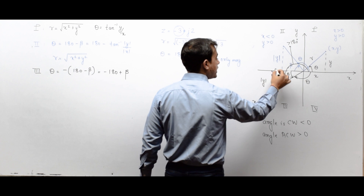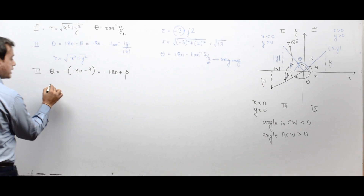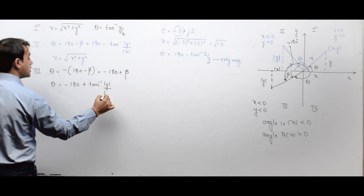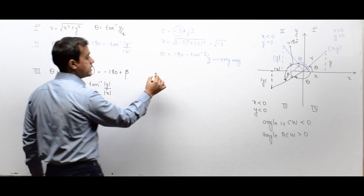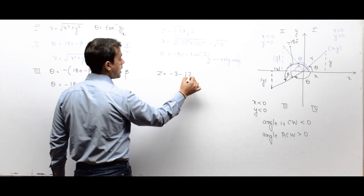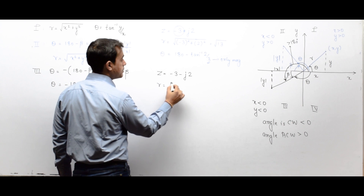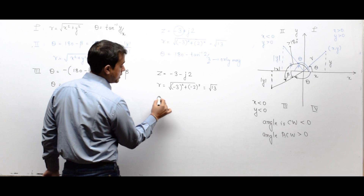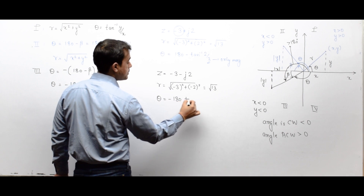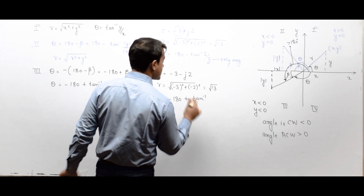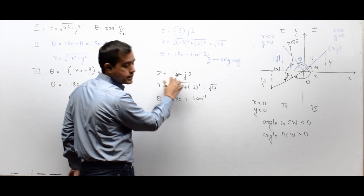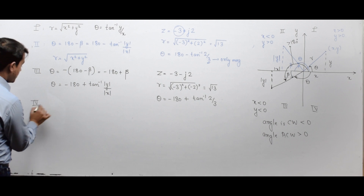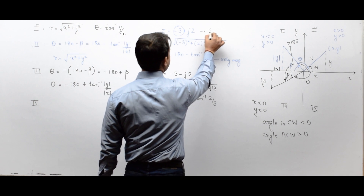For example, for z = −3 − j2: r = √((−3)² + (−2)²) = √13. θ = −180° + tan⁻¹(|−2| / |−3|) = −180° + tan⁻¹(2/3). In the fourth quadrant, x is positive and y is negative. θ is taken clockwise (negative), so θ = −tan⁻¹(|y| / |x|). r remains the same in all cases.